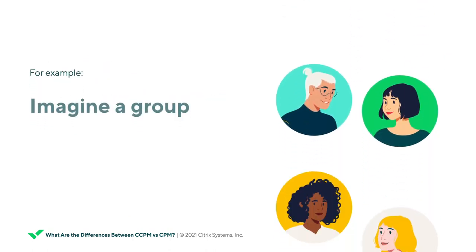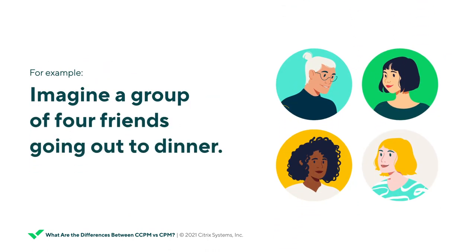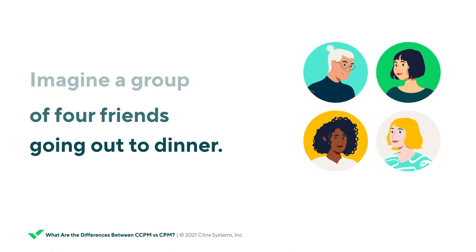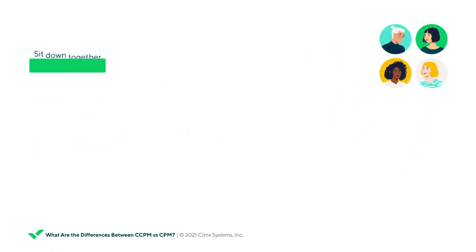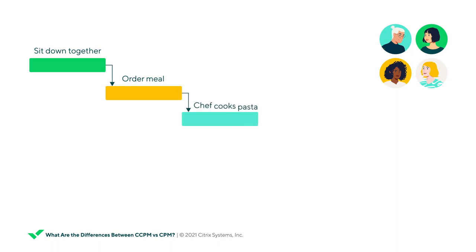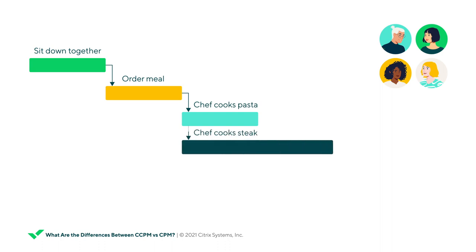Let's pretend our project is a group of four people going out to dinner at a restaurant. The group arrives and sits down together, activity one, then orders their meal, activity two. Two of the group order pasta which takes 10 minutes for the chef to cook, activity three, and two of the group order steak which takes 20 minutes for the chef to cook, activity four.